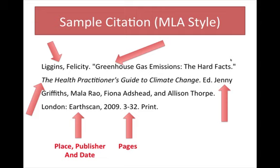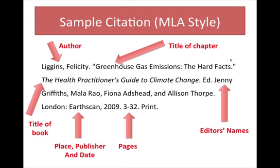So we have two sets of names and two different titles. The first name is the author of the chapter in the book. The italicized title is the name of the book itself. The list of names following the ED for editor are the editors, the people who compiled all the various chapters in the book. Sometimes, but not always, you will see the word 'in' between the chapter title and the book title. This is a dead giveaway that you are dealing with a chapter in an edited book.